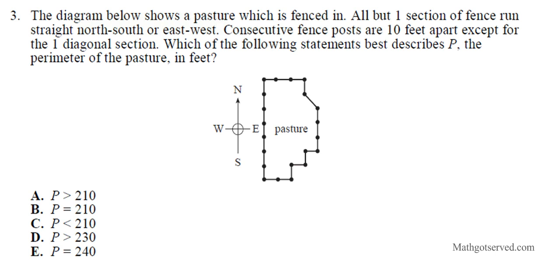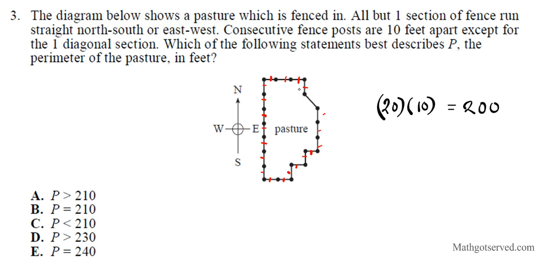How many fences are either north-south or east-west? Counting them up: 1, 2, 3, 4, 5, 6, 7, 8, 9, 10, 11, 12, 13, 14, 15, 16, 17, 18, 19, 20. So we have 20 of them. The perimeter of the north-south and east-west sides is simply 20 times 10, which is 200. But that's not the entire perimeter — we also have this diagonal.